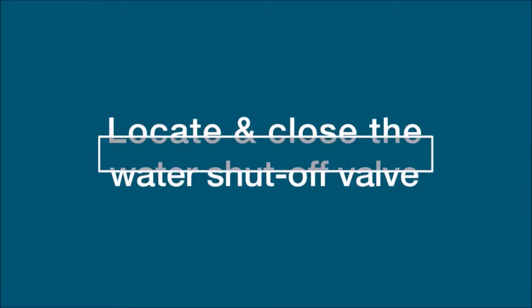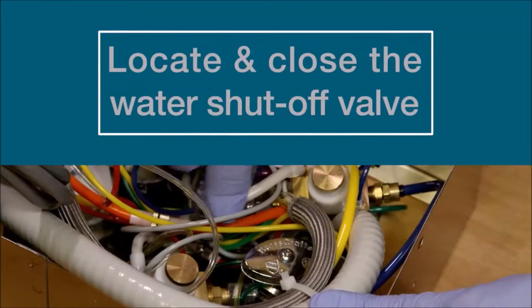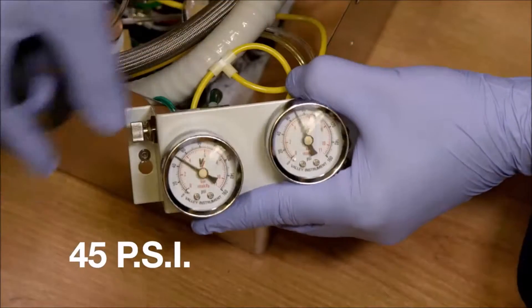To begin, you'll need to locate and close the water shutoff valve for the unit and set a pressure of 45 psi on the regulator.